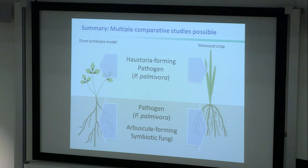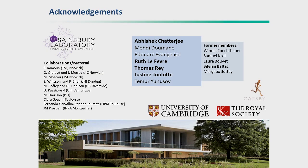In summary, we have one pathogen system that allows us to study all of these things — above ground and below ground, in dicots and monocots. When we identify a mechanism, we can immediately assess whether it is a general mechanism of accommodation, giving it much higher potential for durability and for having effects also on other filamentous pathogens. Thank you very much.